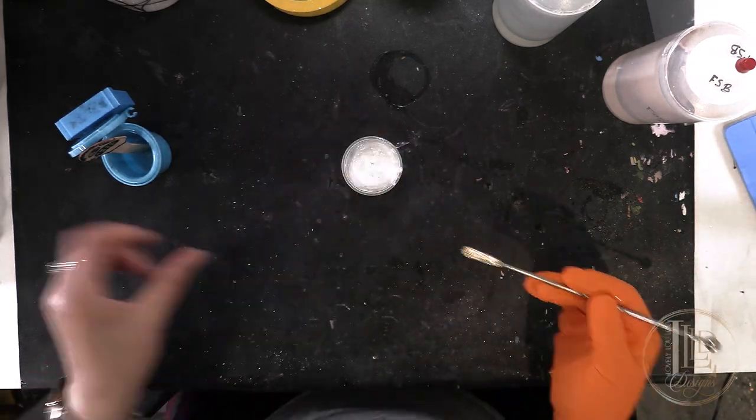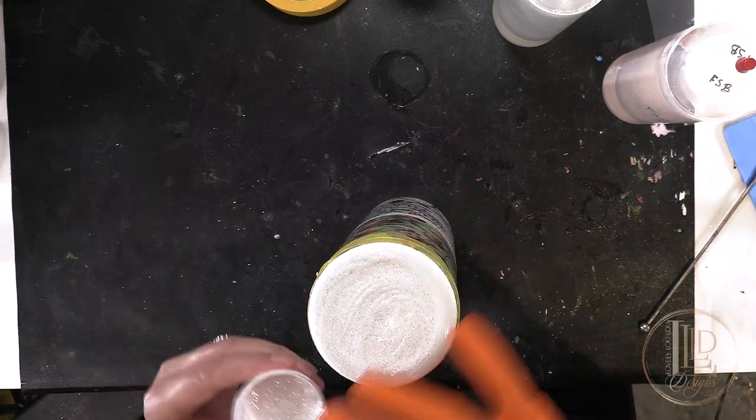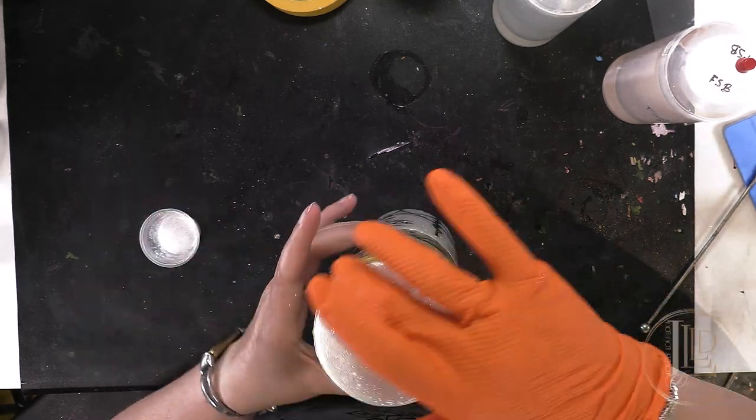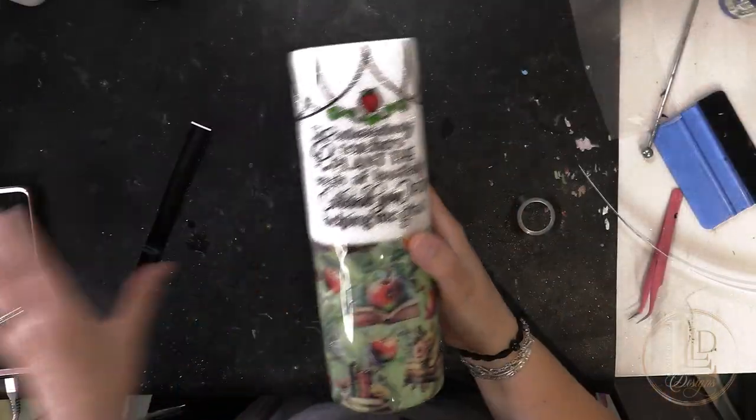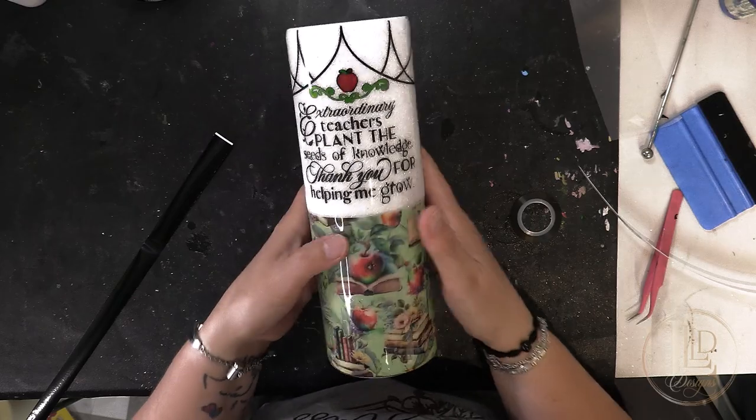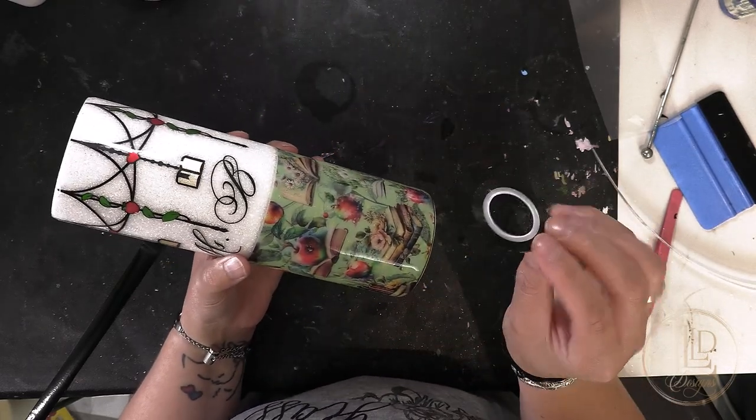After application, I placed my tumbler on my turner, torched the epoxy to remove any air bubbles, and removed my tape before the epoxy had a chance to harden but after it had set enough to no longer be runny. Since the glitter was mixed in with the epoxy, the glitter was already smooth and sealed and I was able to go straight into pinstriping.